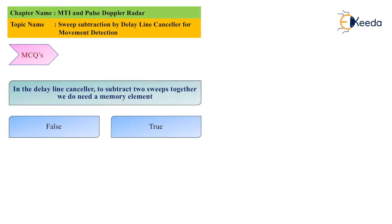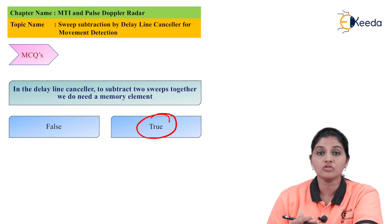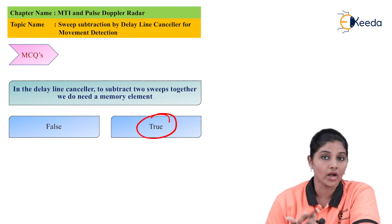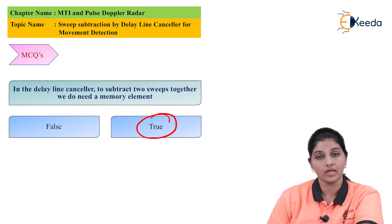The first MCQ question is: in the delay line canceller, to subtract two sweeps together, we do not need a memory element — true or false? The answer is true: in case of the delay line canceller, if we want to subtract two successive sweeps, we do not require a memory element.